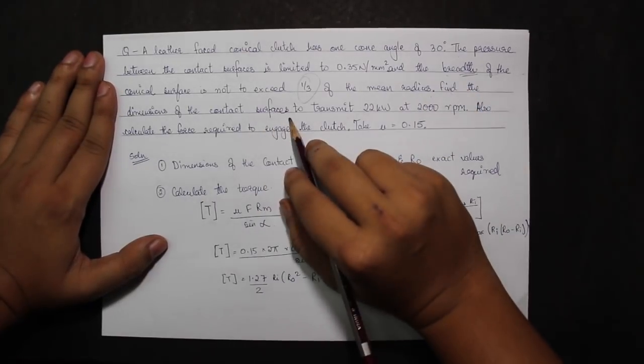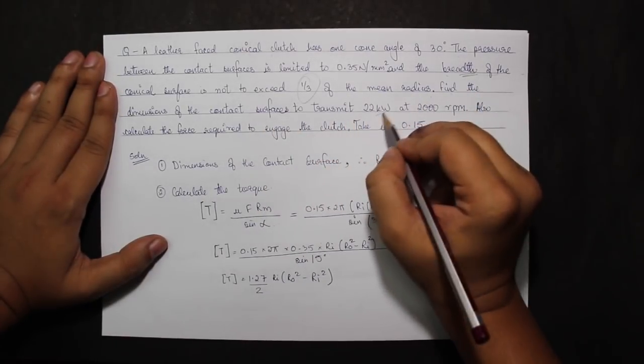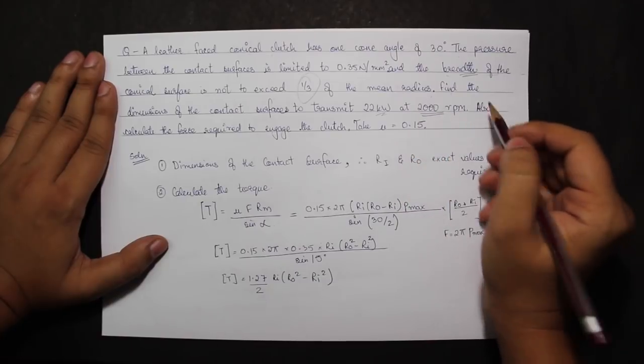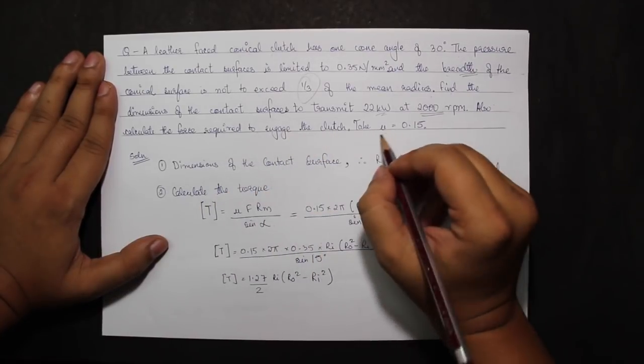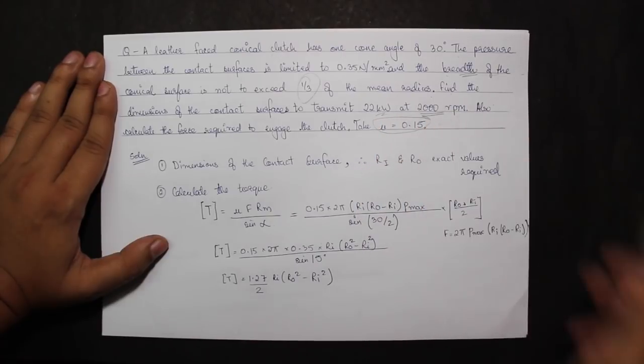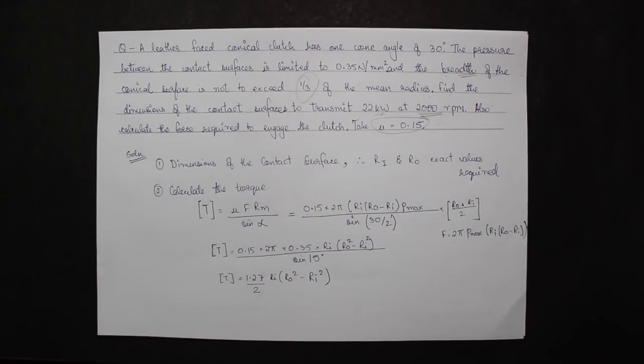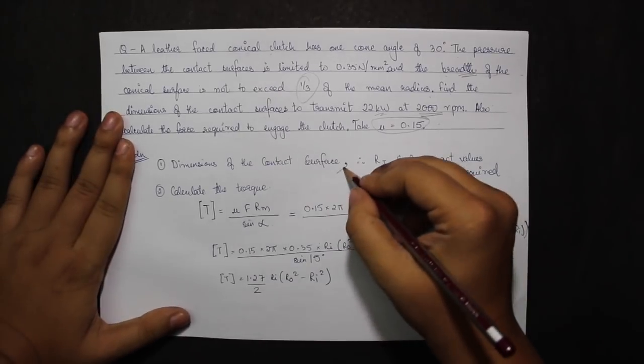Find the dimensions of the contact surfaces to transmit 22 kW at 2000 rpm. Also calculate the force required to engage the clutch. Take mu as 0.15.